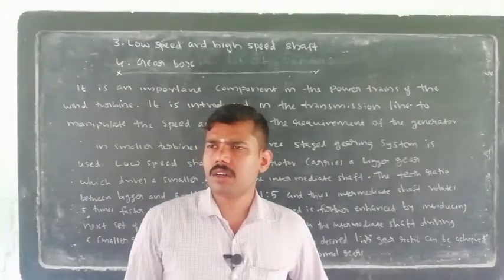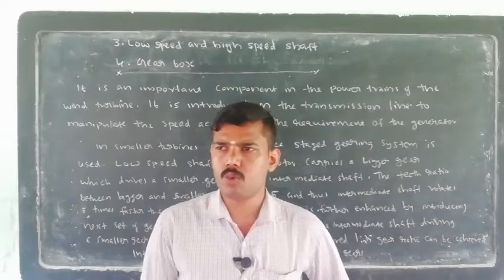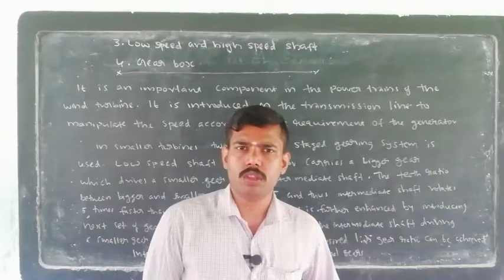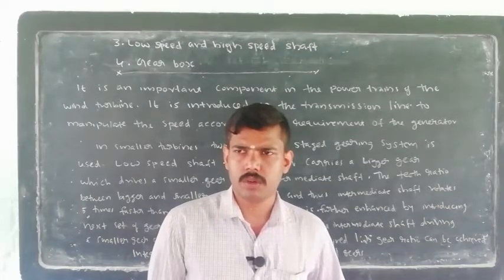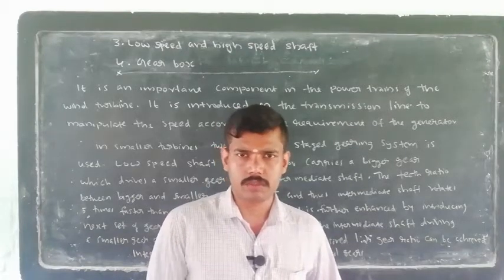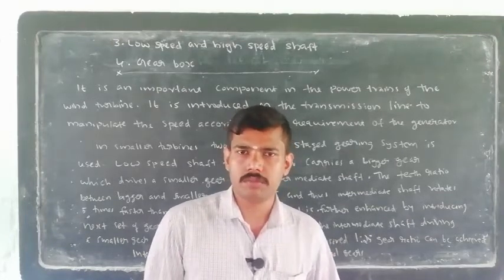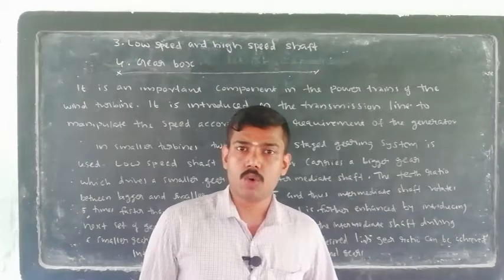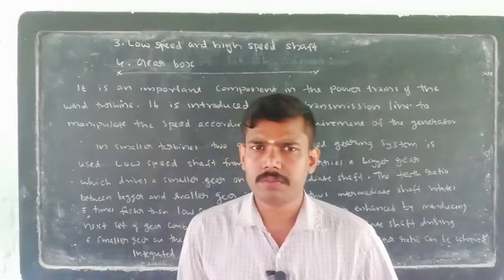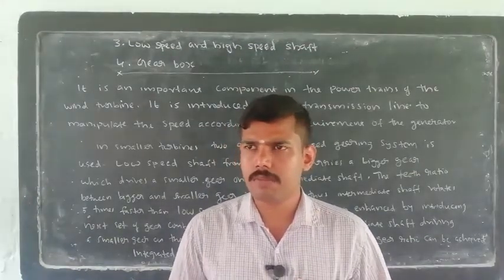Here is the tower. The rotor is rotating 30 to 50 times per minute. But if we rotate the generator, it requires 1000 rotations per minute. So if the rotor rotates 30 to 50 times in one minute, the generator needs 1000 rotations per minute.